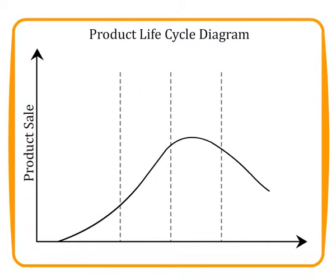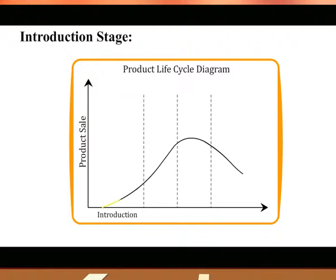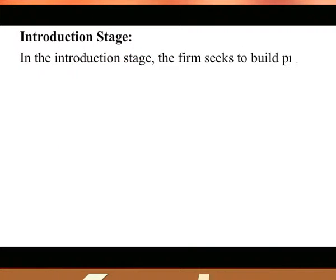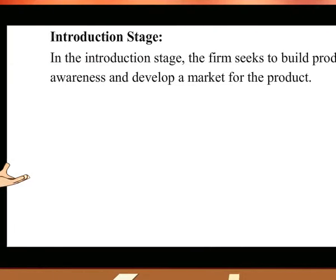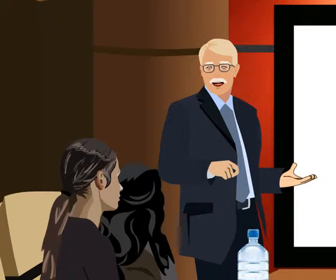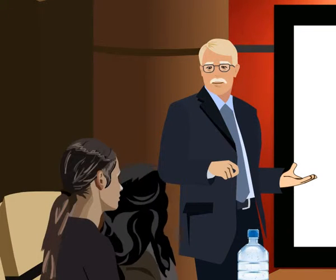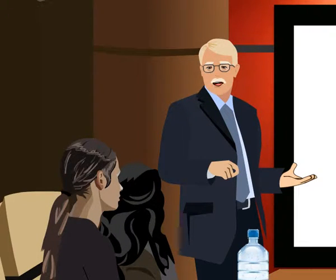We'll individually discuss the four stages of the Product Life Cycle. The first is the Introduction Stage. In the introduction stage, the firm seeks to build product awareness and develops a market for the product. The impact on the marketing mix is as follows: product branding and quality level is established and intellectual property protection such as patents and trademarks are obtained.